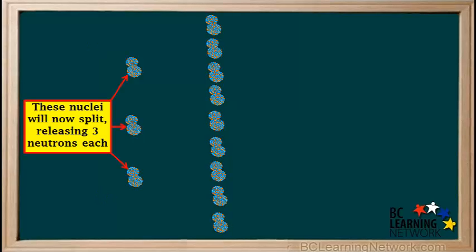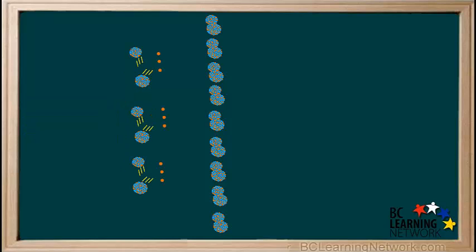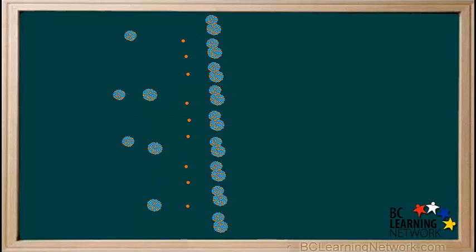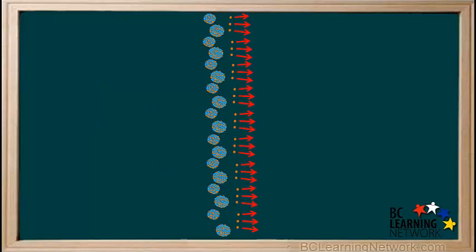These nuclei will now split, releasing 3 neutrons each. Now we have 9 neutrons that could collide with 9 more uranium-235 nuclei, which causes these nuclei to split, releasing 3 neutrons each. Now there are 27 neutrons released, and they can split 27 more nuclei.